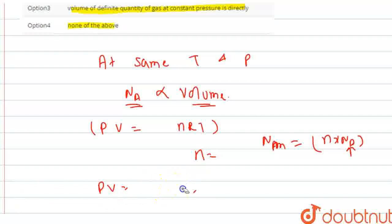Sorry, PV is equal to nm by NA. So PV is equal to nm by NA into RT. So we can prove...